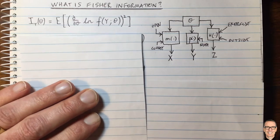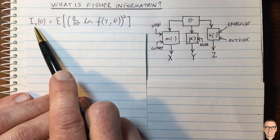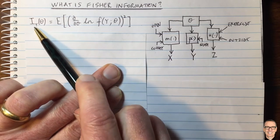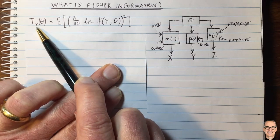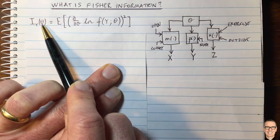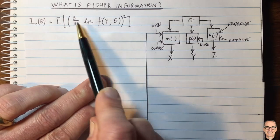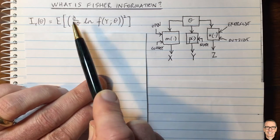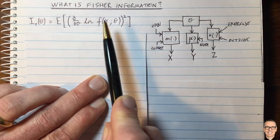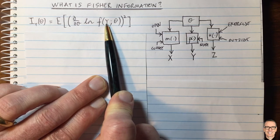So that's an overall intuitive understanding of Fisher information. Let's look at the actual formula. The Fisher information I for a random variable y — how much information does that contain about the parameter theta — is given by this definition: it's the expected value of the square of the derivative of the natural logarithm of the PDF of that random variable. Now that's quite a mouthful, so let's break this down.